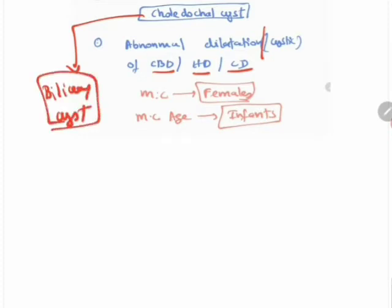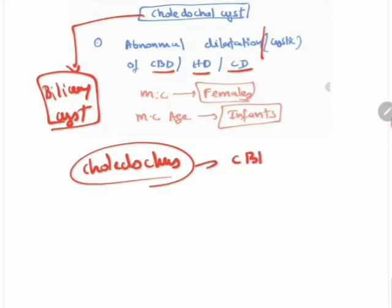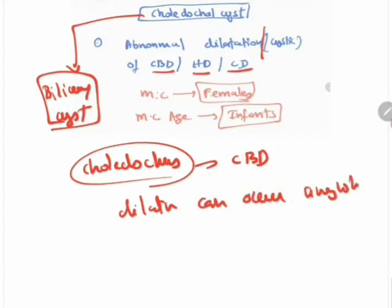The term biliary cyst is considered more appropriate because the word choledochal means common bile duct, but the dilatation can occur anywhere — not only in the common bile duct, but also in the cystic duct, hepatic duct, or the intraduodenal part of the common bile duct. So it is nowadays more appropriate to call it a biliary cyst, and this terminology has been widely adopted.